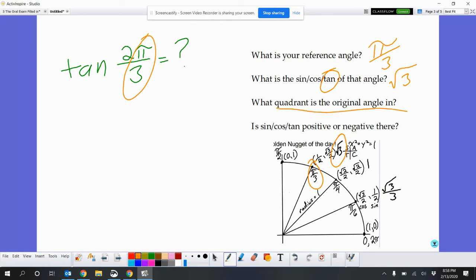Then what quadrant is that 2 pi over 3 in? Well, I know this is 3 pi over 3. So it's just short of that. So it almost got to there, but not quite. It got caught up. So it's in quadrant 2.